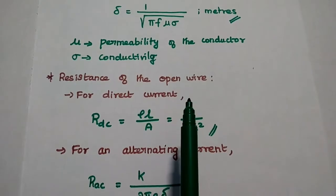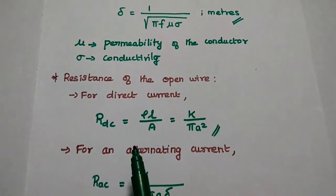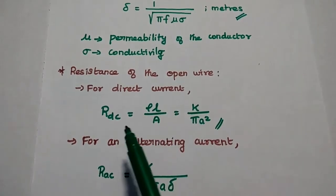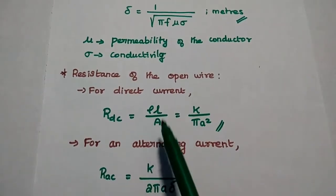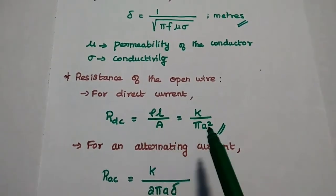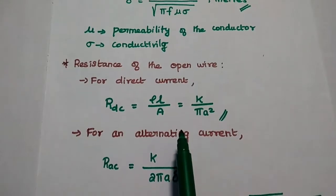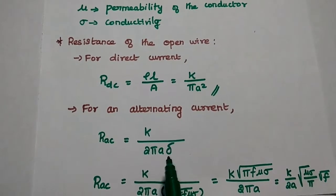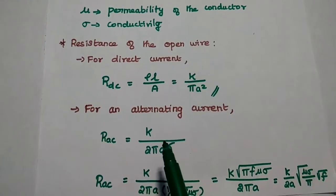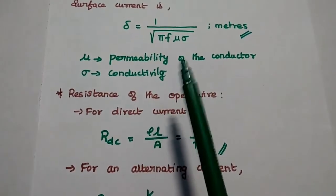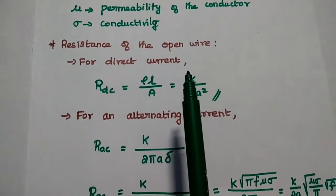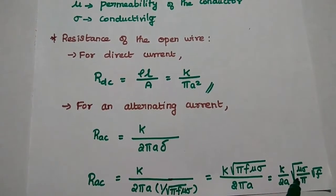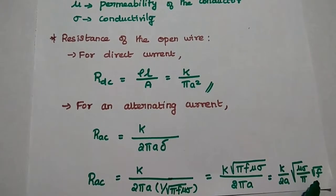Next, we obtain the resistance of the open wire for both DC and AC current. For direct current, R_DC = rho*L / A, where rho*L is denoted as K and the area is pi*A^2. For alternating current, R_AC = K / (2*pi*A * delta). Substituting the value of delta = 1/sqrt(pi*f*mu*sigma), we get R_AC = (K / 2A) * sqrt(mu*sigma/pi) * sqrt(f).